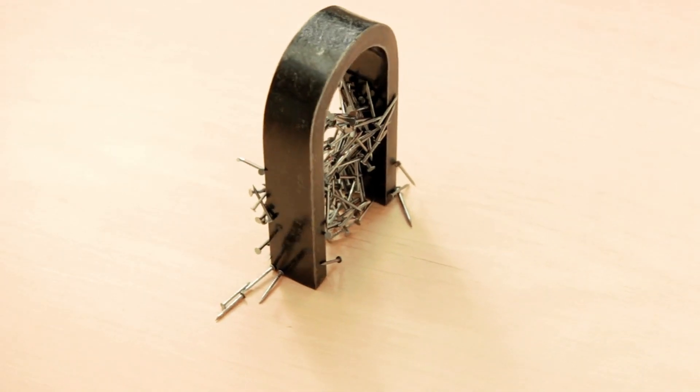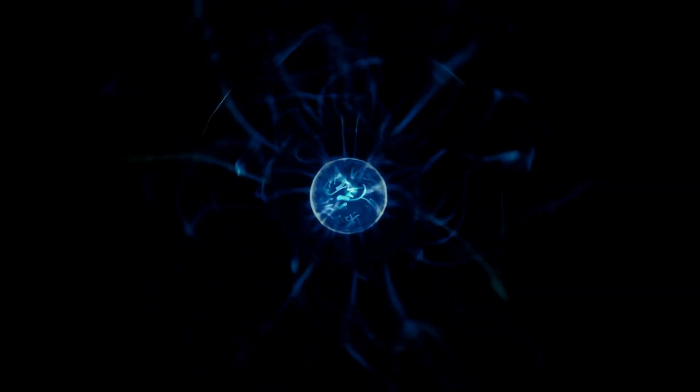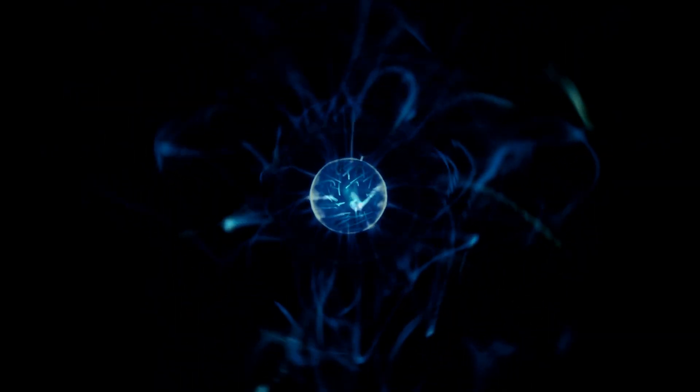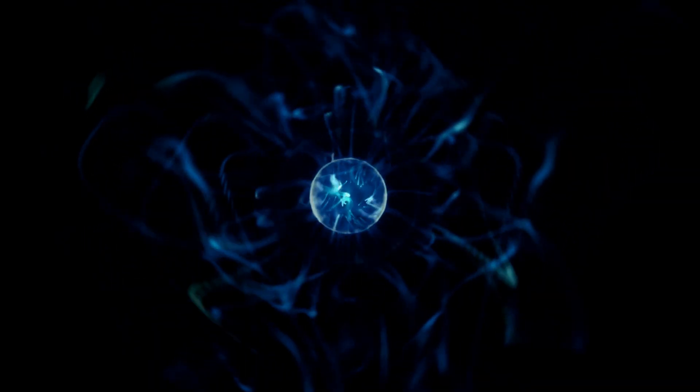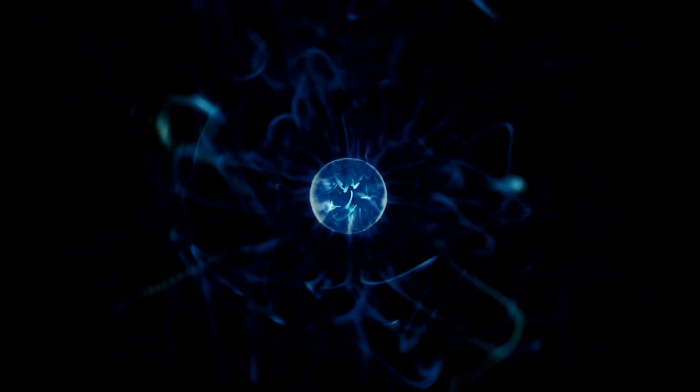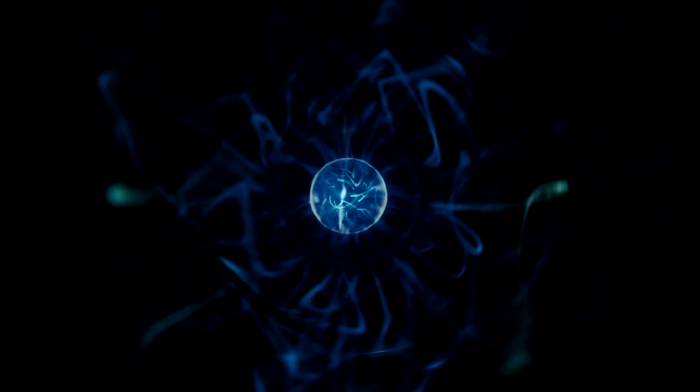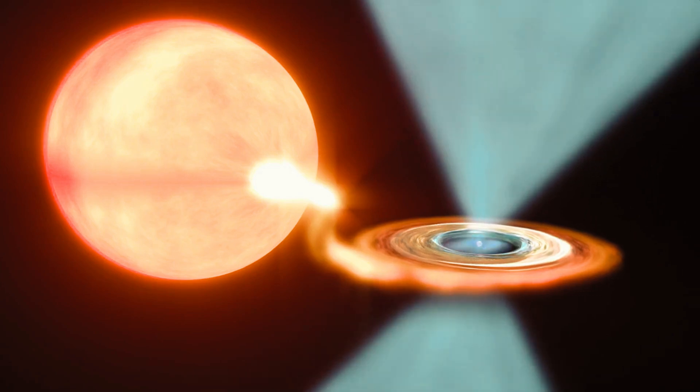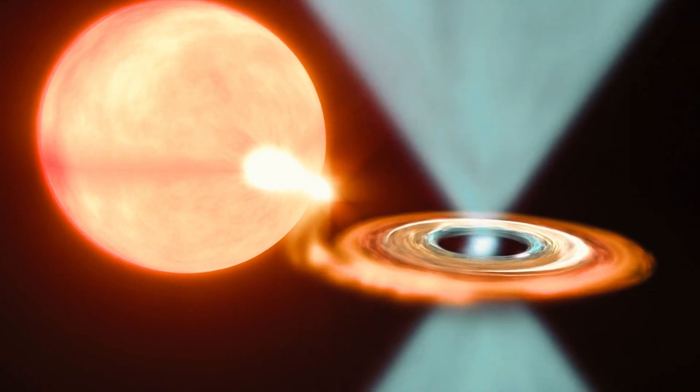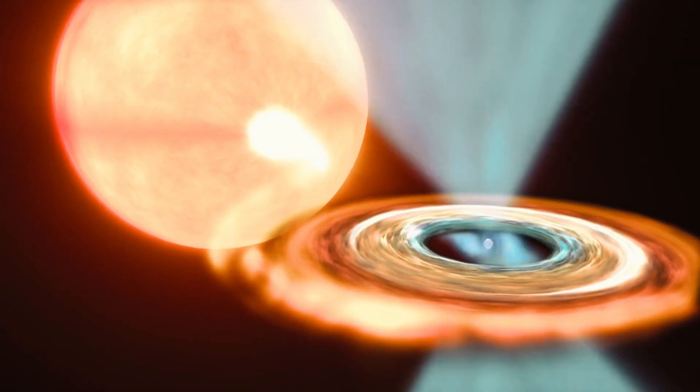So what exactly is a magnetar? Picture this, you take a star much bigger than our sun, let it explode in a supernova, and then cram all that leftover stellar guts into a sphere about 20 kilometers wide. That's right, we're talking about a neutron star, already an incredibly dense and bizarre object.